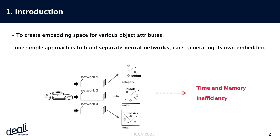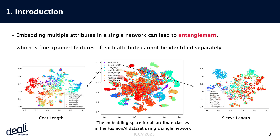To create embedding space for various object attributes, a simple strategy involves the development of separate neural networks, each tasked with generating its unique embedding. Nevertheless, this naive approach poses significant challenges related to time and memory efficiency.